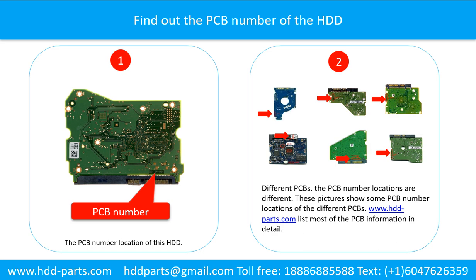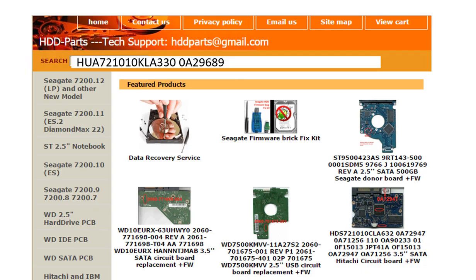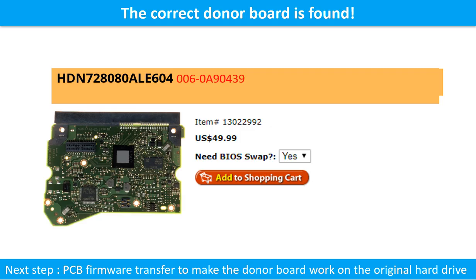Different printed circuit boards have different PCB number locations. If you want to find your own PCB number, you may go to www.hdd-parts.com, which lists most PCB information in detail. We use the PCB board number and the hard drive model number to search for the donor PCB board. Once we find the correct donor PCB board, the next step is to do the PCB firmware transfer to make the donor board work on the original hard drive.